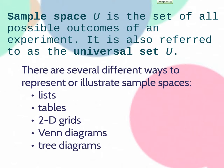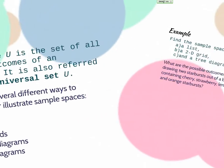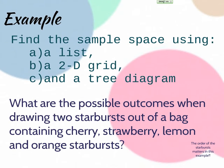So what we're going to do is we're going to take a look at an example and actually find a sample space in three different ways. We're going to find the sample space using a list, using a 2D grid, and using a tree diagram. Just so we can kind of compare the same situation, but in three different ways.